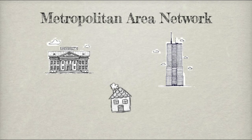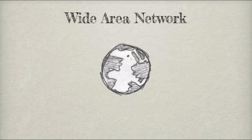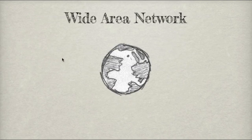The biggest type of network is a wide area network, and the internet is an example of a wide area network. Any computers on a network that's over 30 miles apart is usually a wide area network.